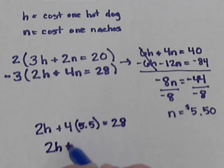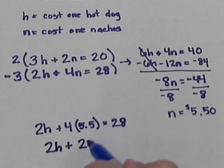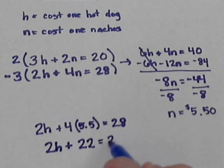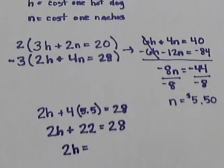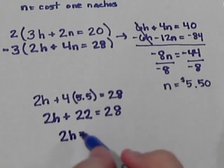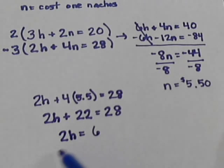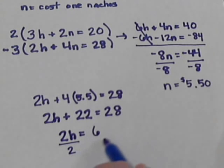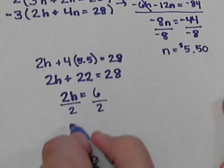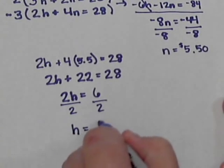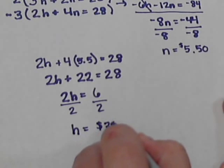Four times 5.5, that's twenty-two. Subtract the twenty-two, so we have 2h. If we subtract twenty-two from twenty-eight, we're left with six. And then finally divide by the two. We see that the price of the hot dogs are three dollars each.